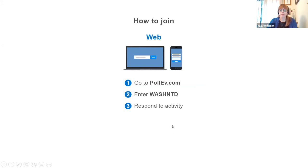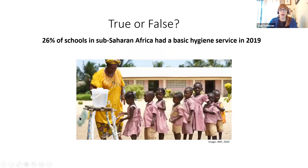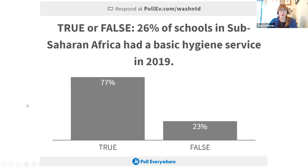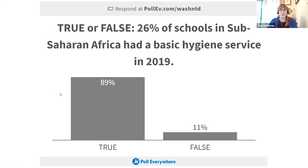We're going to have a very rapid true-or-false quiz to get us going. The first question is: 26% of schools in sub-Saharan Africa had a basic hygiene service in 2019. Most of you are correct — that is the correct figure for schools, showing a quite difficult situation in most sub-Saharan African schools.